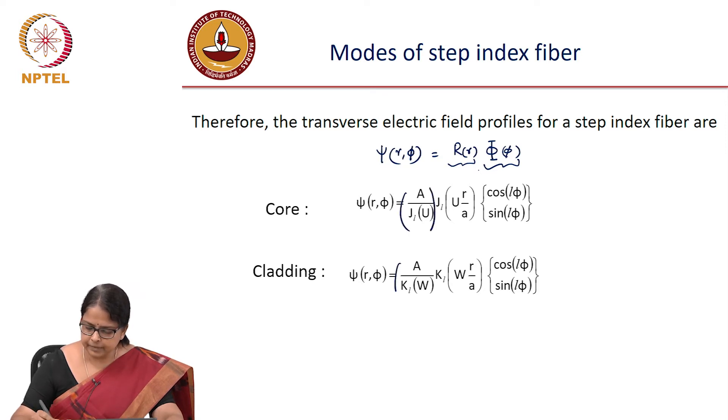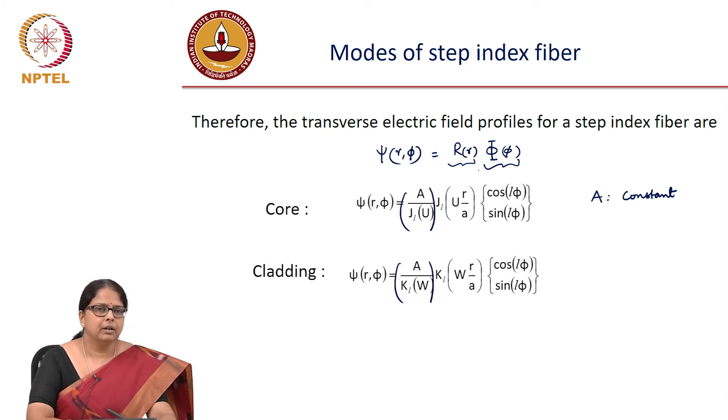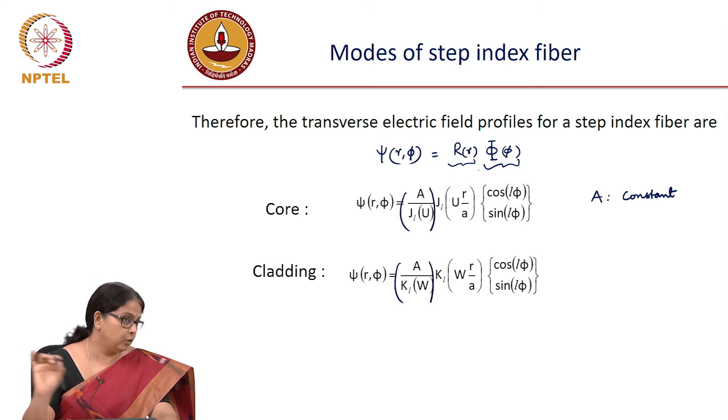This of course is a constant. Do you agree? Is this a constant? I can tell you that A is a constant, J_L(u) and K_L(w) is that constant or not a constant? Once I have picked the mode, remember what your u was: root of k₀² n₁² minus β². Once I know my mode, I know my β and once I know my β, so u is a constant. But at the moment I do not know what that β is. But for different modes I know that βs are different. So this is a constant, you will realize in a minute why we need this peculiar constant sitting here.